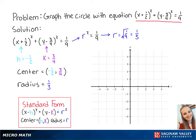Now we can graph the points of the circle. The center is at negative one-half, three-fourths, and because the radius is equal to one-third,